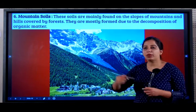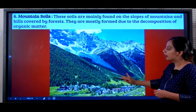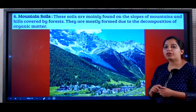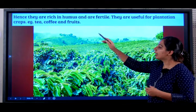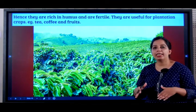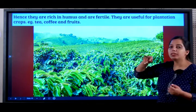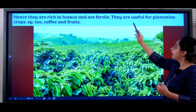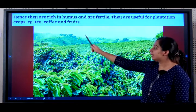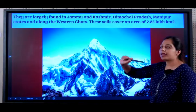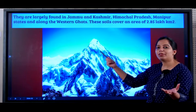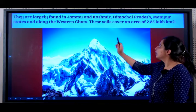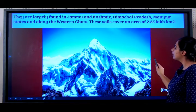The last type of soil is mountain soil. They are found on the slopes of mountains and hills covered by forests. They are formed due to the decomposition of organic matter and are rich in humus — because a lot of organic matter dies and the soil is formed from it. Humus is dead and decayed matter of living organisms, whether plants or animals. They are very fertile and useful for plantation crops like tea, coffee, and fruits. They are found wherever mountains and hills are present — Jammu and Kashmir, Himachal Pradesh, Manipur, and along the Western Ghats. They cover an area of 2.85 lakh square kilometers.